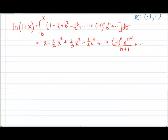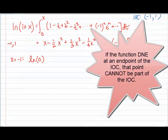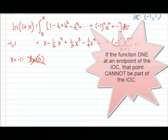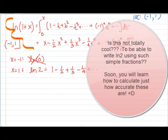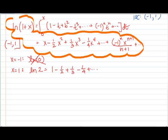Here we also have to check our endpoints again. Our original IOC was negative 1 to 1. So I want to test when x equals negative 1. I get ln of 0, which doesn't exist, so therefore it has to be an open interval at negative 1. But what about x equals positive 1? I get ln of 2, which does exist, so this is going to be closed at positive 1. Here's the series for natural log of 1 plus x.